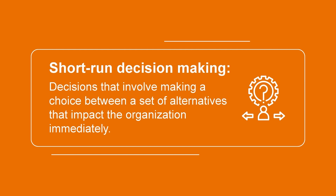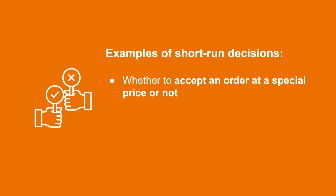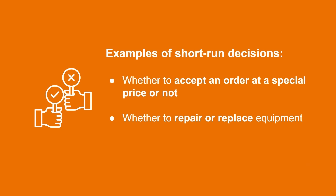But what do we mean when we say short-run decision-making? These types of decisions are generally more tactical in nature and involve making a choice between a set of alternatives that impact the organization immediately. For example, a company could be faced with the decision whether to accept an order at a special price or not. Or maybe they're looking to make the decision whether to repair or replace a piece of equipment. In the short run, they could continue to keep spending money on expensive repairs to the equipment. However, what if they could save money by just investing in a brand new piece of equipment today?